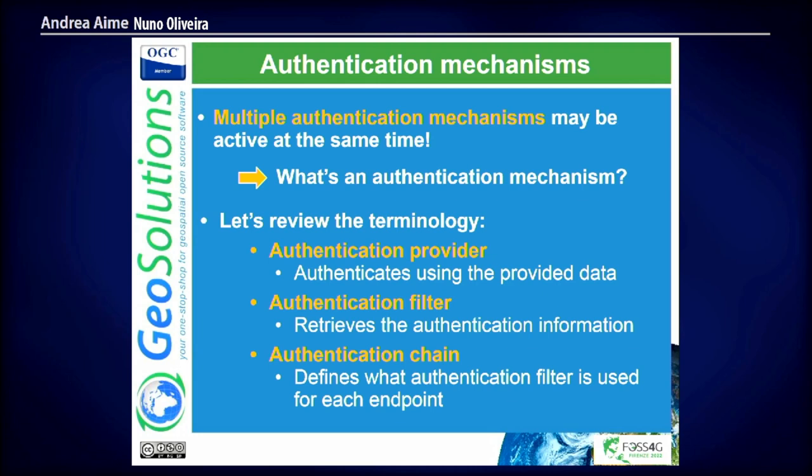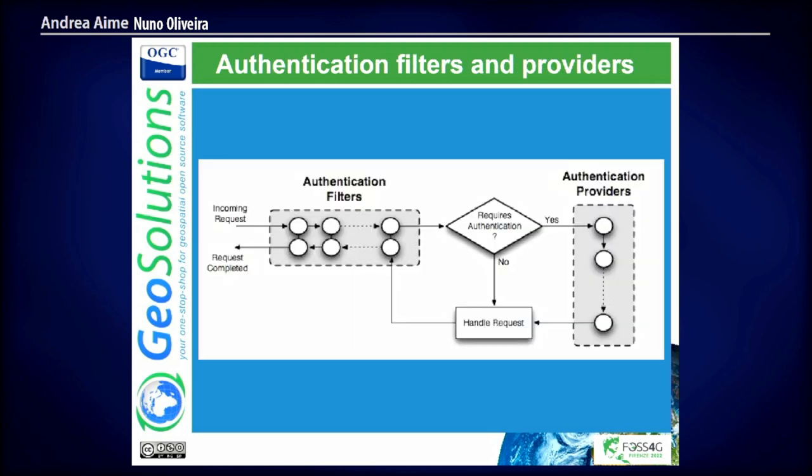The authentication filter extracts the authentication information and passes it to the authentication providers, which will try to authenticate it. All authentication providers will be tried out until one returns true. We need to be very careful when we add authentication providers to GeoServer — because if the first one says yes, no other one is checked and the user is authenticated. This is still very vanilla GeoServer, no advanced stuff at this stage.